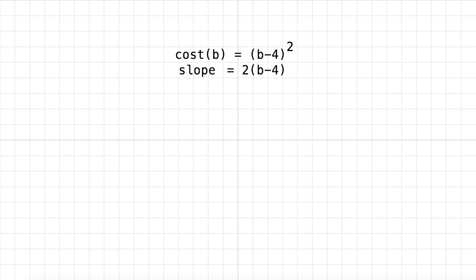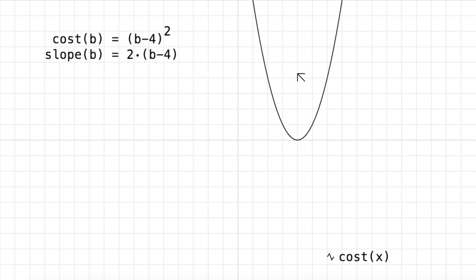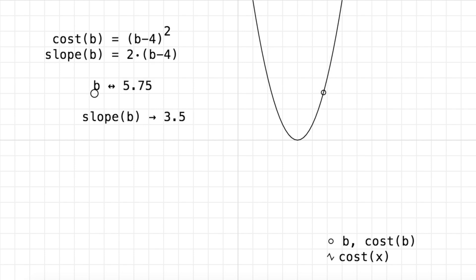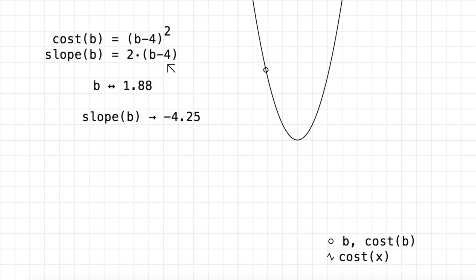Let's verify that it works. It's a function of b — we'll graph our cost function and pick a value of b. Plugging in, we get 2 times b minus 4, giving us 3.6. When we're to the right of our target, the slope is positive and increases the further we get. When we're at the target, the slope is 0. And when we're below the target, the slope is negative. So our derived function is correct.